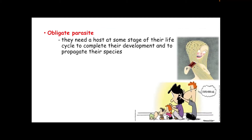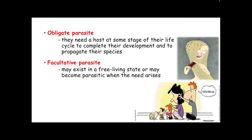An obligate parasite needs a host at some stage of its life cycle to complete development and propagate its species — it depends entirely upon its host for existence. Examples are lice and mites. Facultative parasites may exist in a free-living state. They could be free-living or parasitic — they can get nutrition without harming another organism, but if an instance arises, they could become parasitic and depend on another organism to survive.